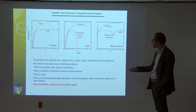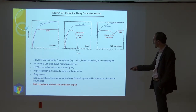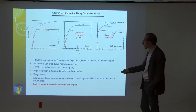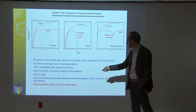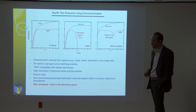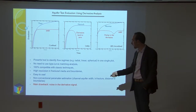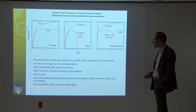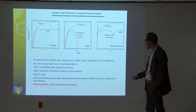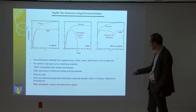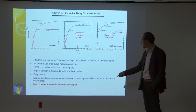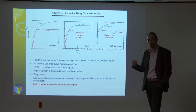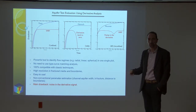The derivative analysis is a powerful tool to identify flow regimes — radial flow (where Theis and Cooper-Jacob are valid), linear, and spherical — all in a single plot, with no need for type-curve matching. It is 100% compatible with classic techniques, gives high resolution in fractured media, and helps identify boundaries. Using analytical methods, we can estimate non-conventional parameters such as channel aquifer widths, hydraulic conductivities related to fractures, and distances to boundaries. However, the main drawback is that the derivative is a noisy signal, so we need a smoothing algorithm.